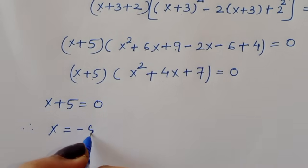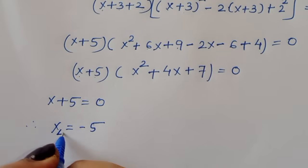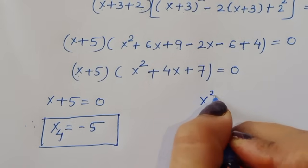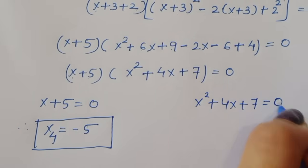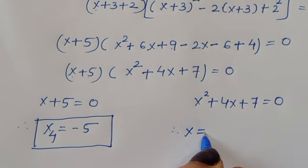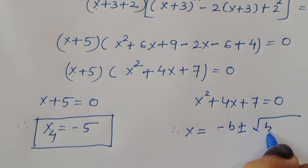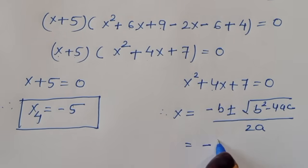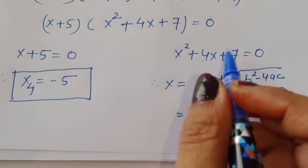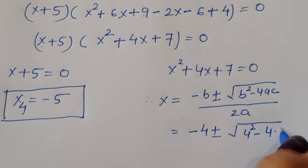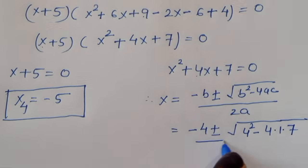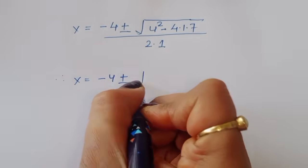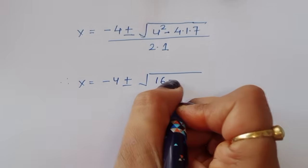We got two equations from Case 2: x+5 = 0 and x² + 4x + 7 = 0. From the first one, x = −5, so x₄ = −5. For x² + 4x + 7 = 0, we apply the quadratic formula: x = (−4 ± √(16 − 28)) / 2.